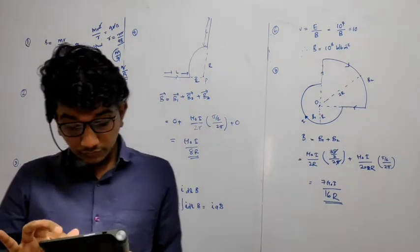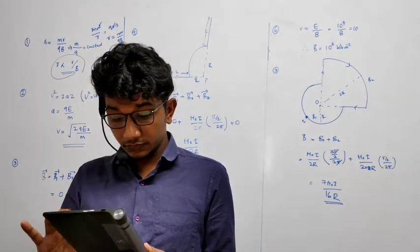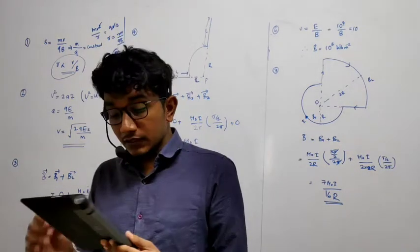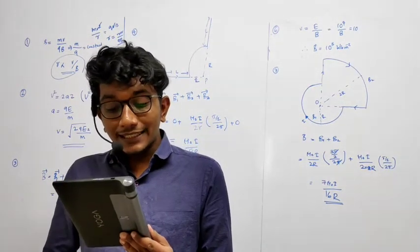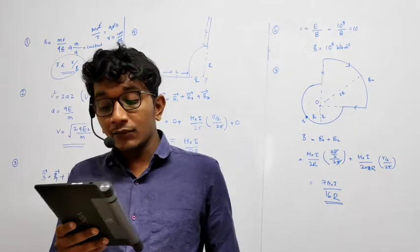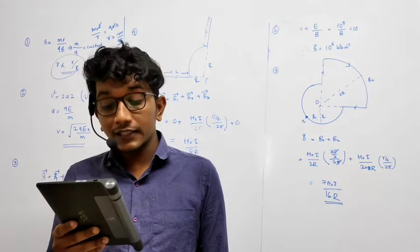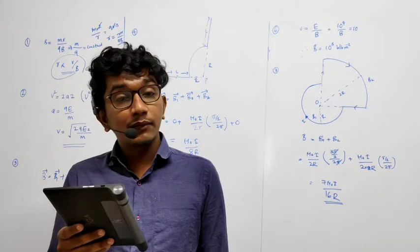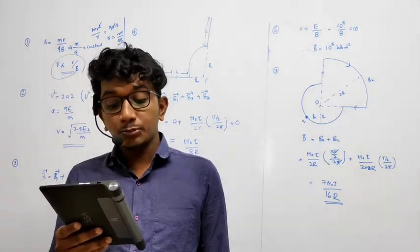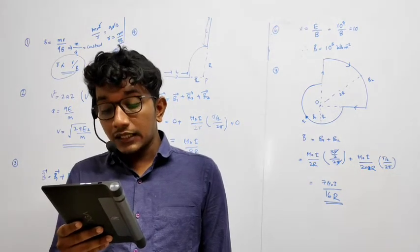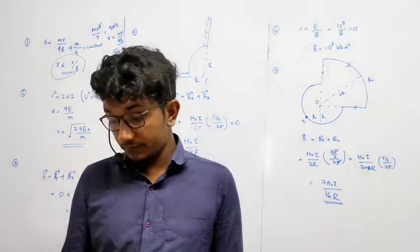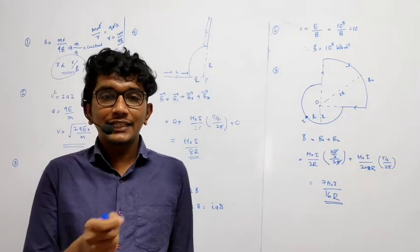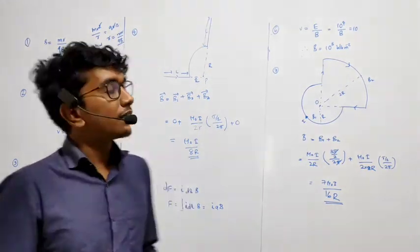Question number 2: A particle having mass m and charge q is released from the origin in a region in which the electric field and magnetic fields are given by magnetic field B equals minus B0 j-cap, E equals E0 in k-cap. Find the speed of the particle as a function of its z-coordinate. This is also very simple question. So when you look at the options, you would see that it is very difficult to make the equation, but it is very easy.